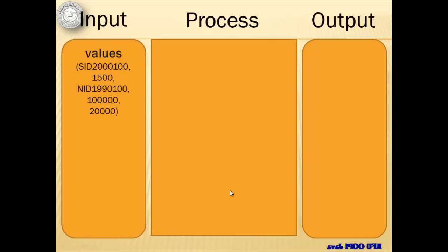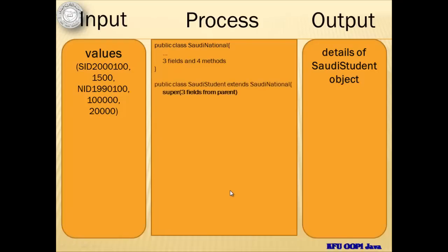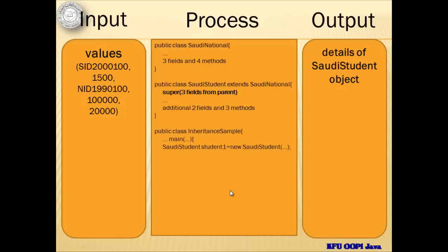Our inputs will be the values declared during the instantiation of SaudiStudent. Our output will be the details of the Saudi student. For the process, we will create a SaudiNational class with three fields and four methods. We will next create a SaudiStudent class that extends SaudiNational. To call the parent's constructor, we will use the super command. We will also declare two more fields and three more methods in the subclass. Finally, in InheritanceSample, we will instantiate SaudiStudent and display all the details.